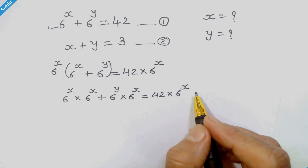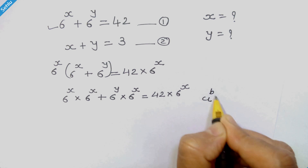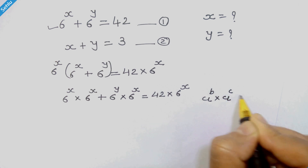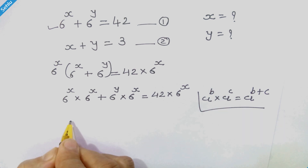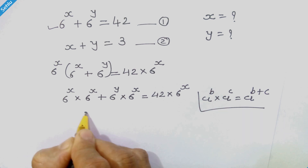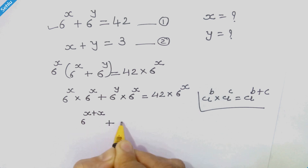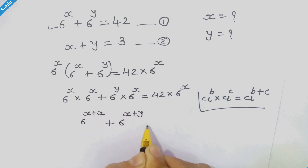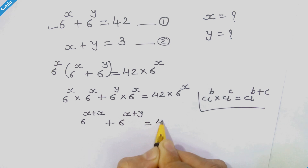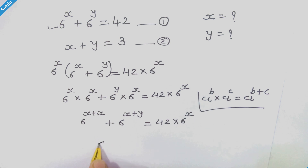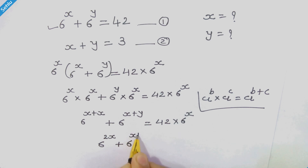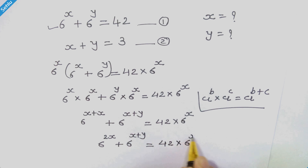Now we use the rule which says a raised to b times a raised to c can be written as a raised to b plus c. So in the next step we can write 6 raised to x plus x, plus 6 raised to x plus y, equal to 42 times 6 raised to x. This simplifies to 6 raised to 2x plus 6 raised to x plus y, equal to 42 times 6 raised to x.